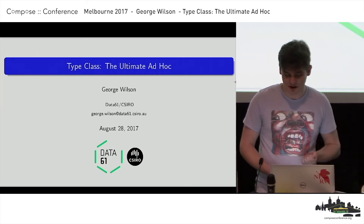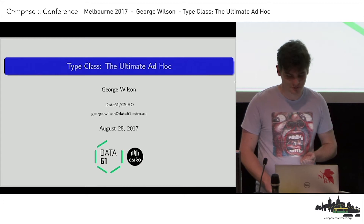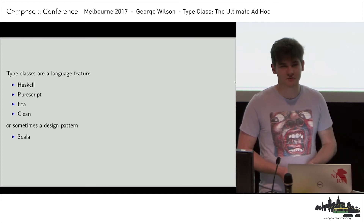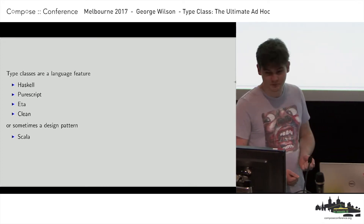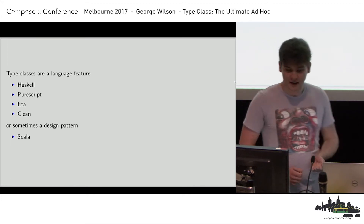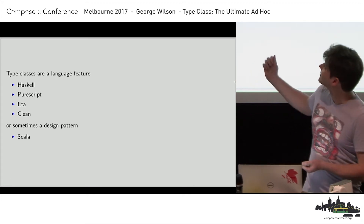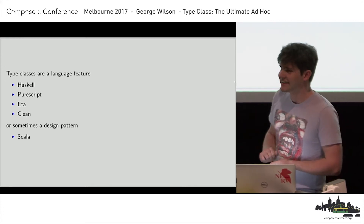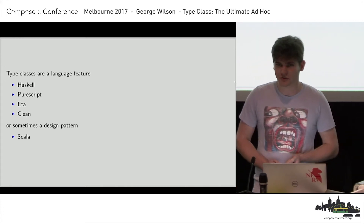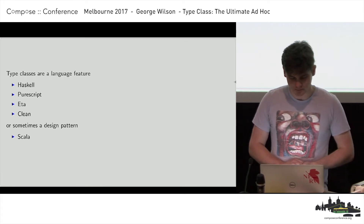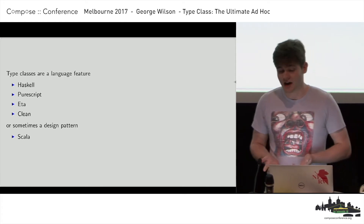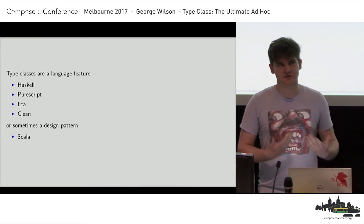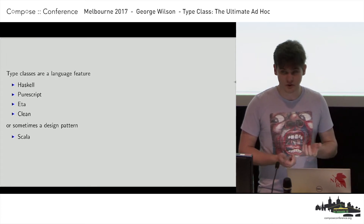Type classes are a language feature that some languages have. Haskell, PureScript, and Eta are all fairly similar languages and they have type classes. And this other language, Clean, actually has type classes, although I don't know anyone who's ever written any Clean. Sometimes type classes aren't a language feature — sometimes we use them as a kind of design pattern in a language that doesn't support them, such as Scala. And we'll get into that later on.